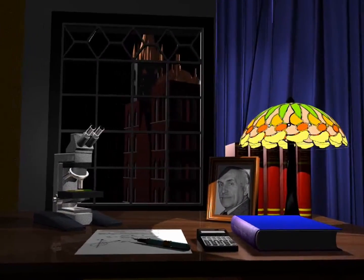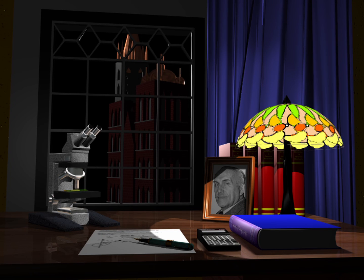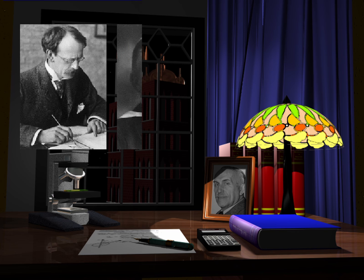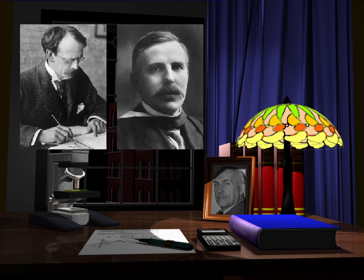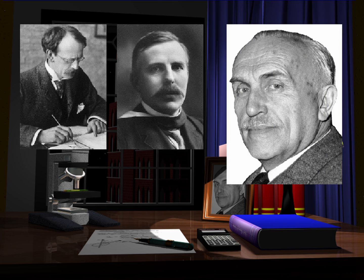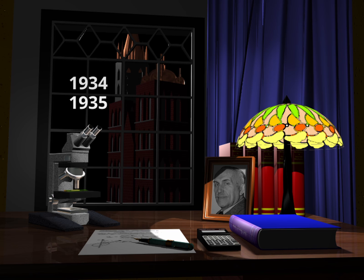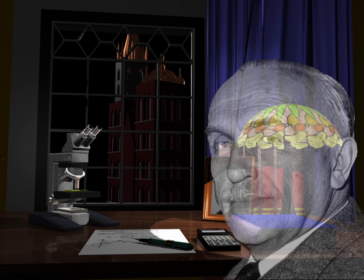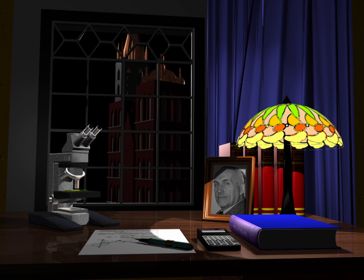By now you know almost everything. You could still ask who is the man in this photograph. Here is Joseph Thomson. This is his student, Ernest Rutherford. And this is Henryk Niewodniczański. As a young scientist, in the years 1934 and 1935, he worked under the direction of Rutherford. Henryk Niewodniczański in 1955 created our institute — he was its first director and the head of our Department of Nuclear Spectroscopy.